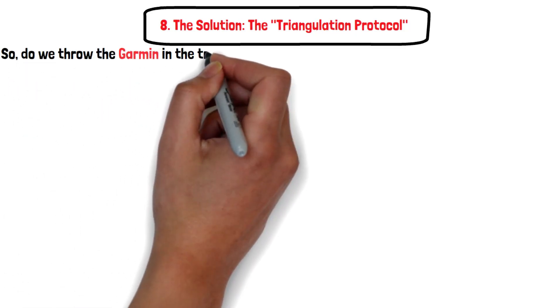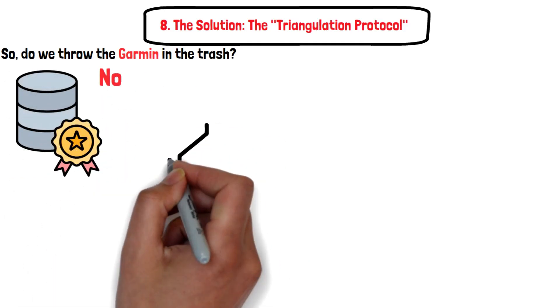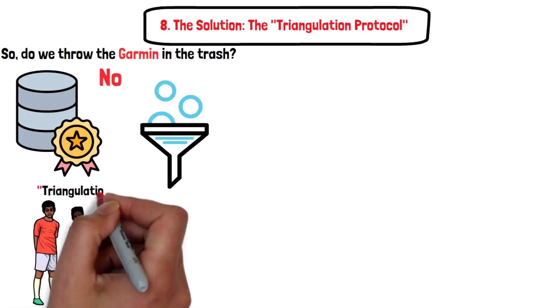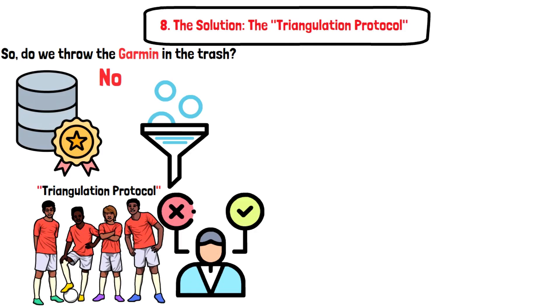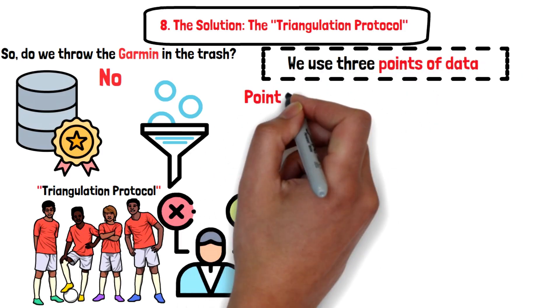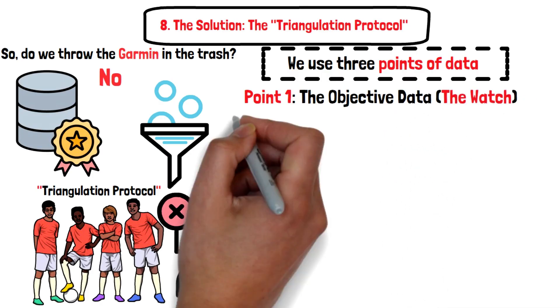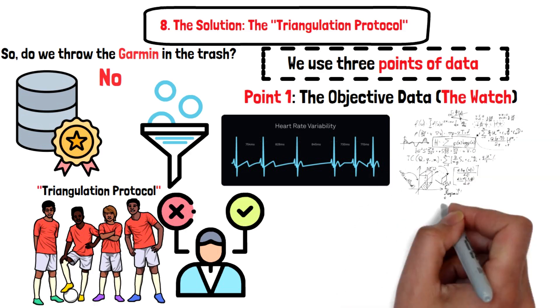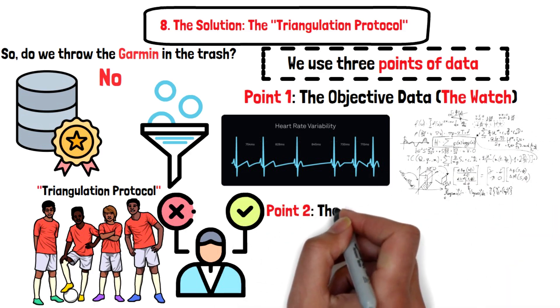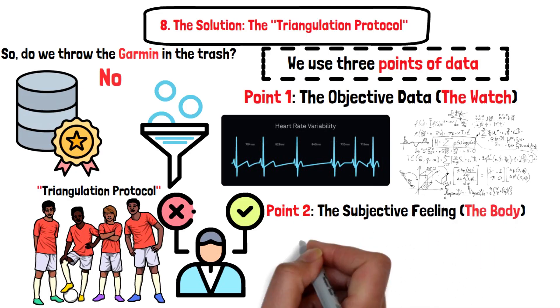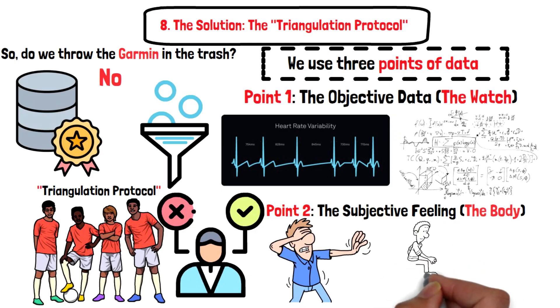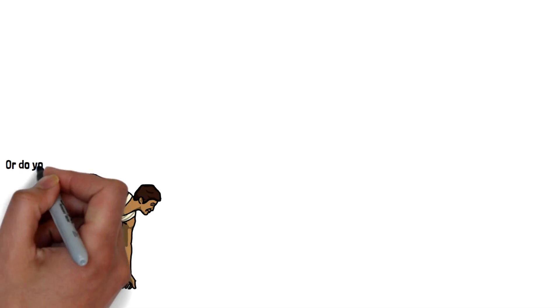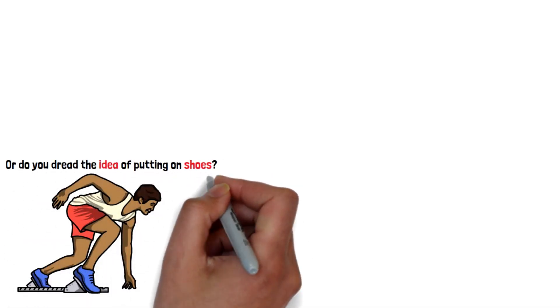Eight, the solution: the triangulation protocol. So do we throw the Garmin in the trash? No. Data is valuable, but it needs a filter. I teach my athletes the triangulation protocol. We never make a decision based on one number—we use three points of data. Point one, the objective data: the watch. Yes, look at the HRV trend, look at the god metric timing. Point two, the subjective feeling: the body. Close your eyes. How do the legs feel walking up the stairs? Do you have the itch to run, or do you dread the idea of putting on shoes? Your brain is the most sophisticated computer on Earth—trust it.